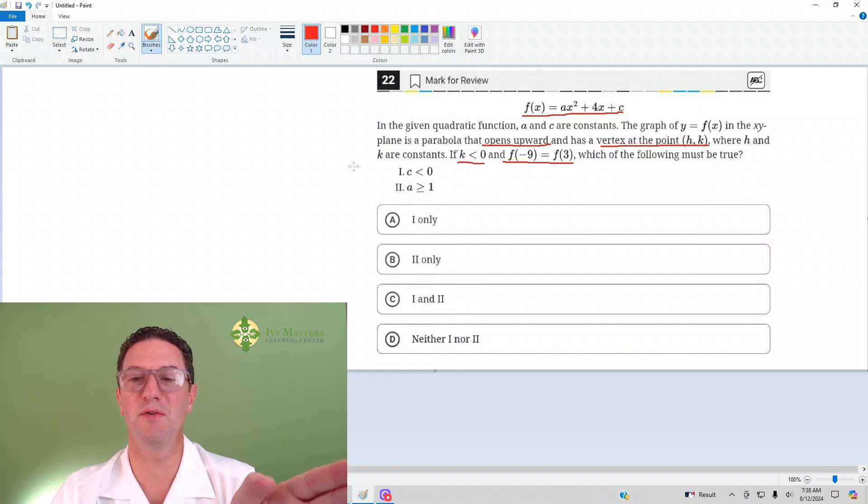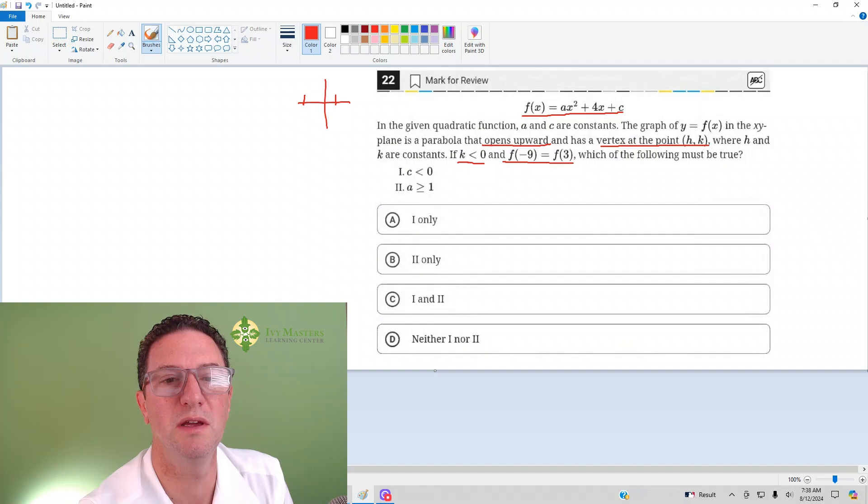The x part of the vertex has to be the midpoint between those two because parabolas are symmetric. So if we're on a coordinate plane, let's say that's negative nine and that's three. The x part of the vertex has to be the midpoint.